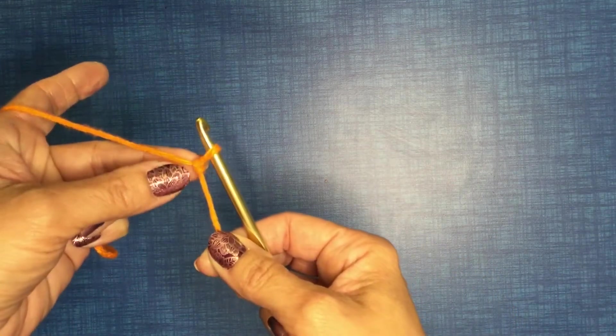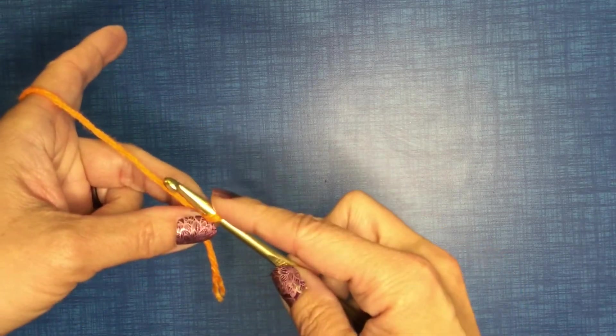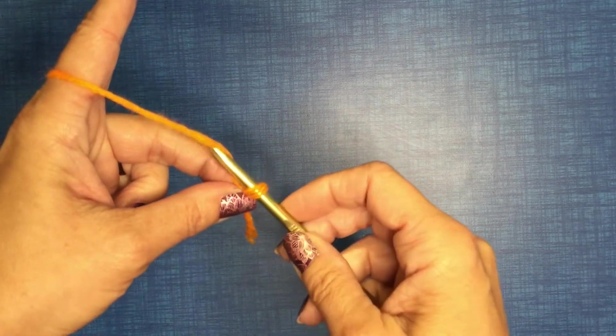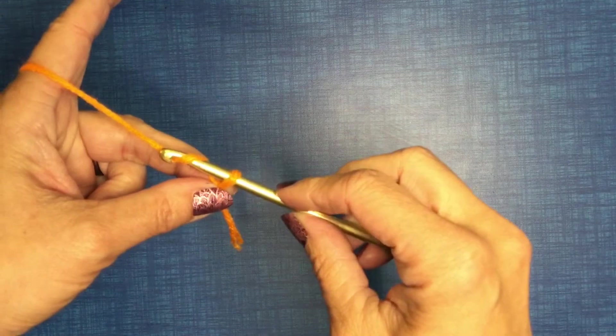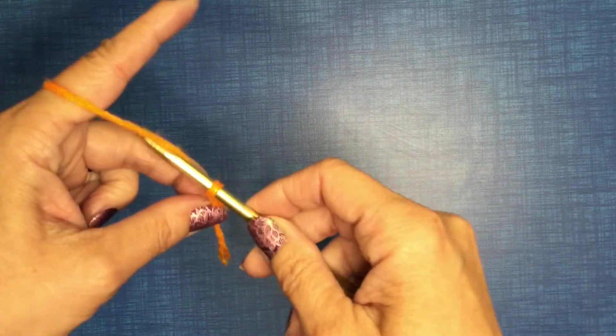Okay, so at this point we're going to chain. So how we're going to chain is we have one loop on our hook. We reach for more yarn, curve, pull through our loop. Do it again.